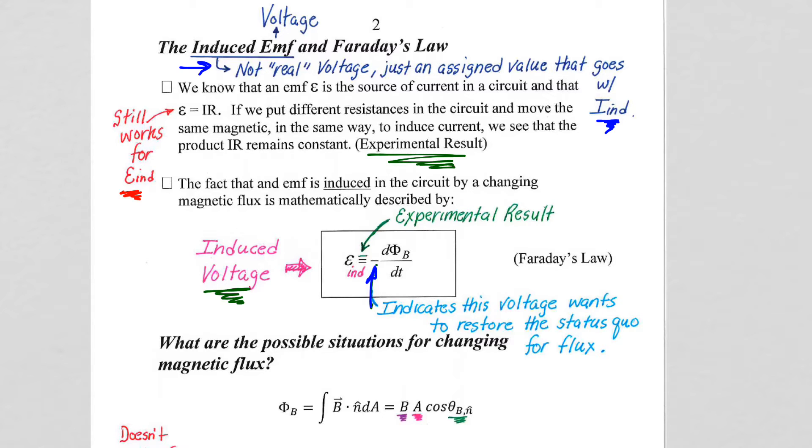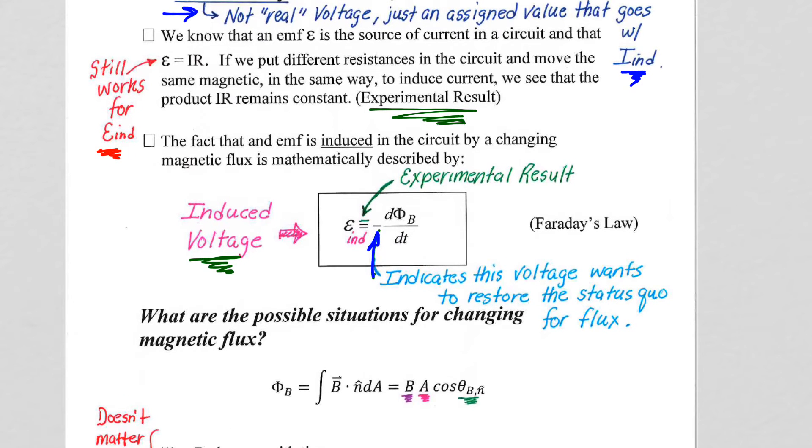The negative is there, and it's going to act in a mathematical sense to indicate that this voltage is a restoring effect. It wants to fight the effect that's causing it. And we've seen a negative as a restoring parameter, as a restoring aspect to systems when we did Hooke's law and springs.